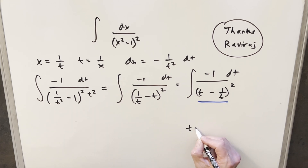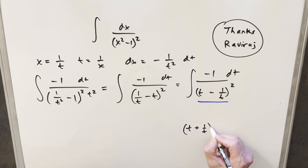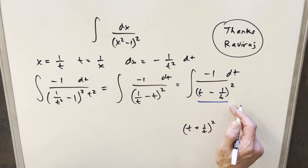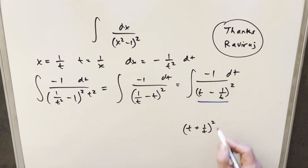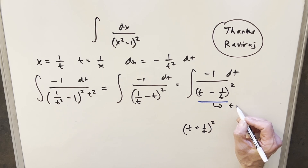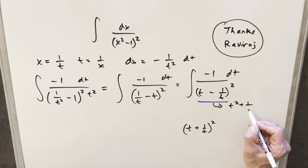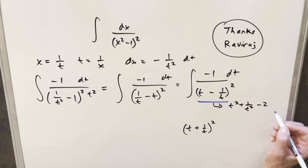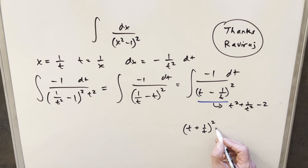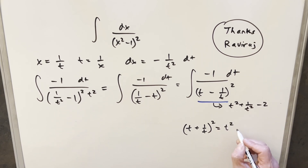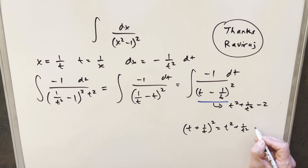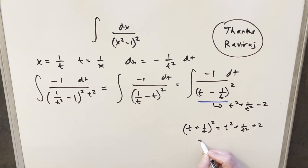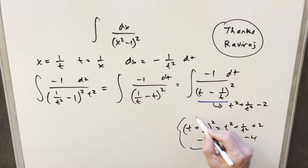If we look at (t plus 1/t) squared and compare it to (t minus 1/t) squared: multiplying out (t minus 1/t) squared gives t squared plus 1/t squared minus 2, while (t plus 1/t) squared gives t squared plus 1/t squared plus 2. So if I just subtract 4 from (t plus 1/t) squared, it equals (t minus 1/t) squared.